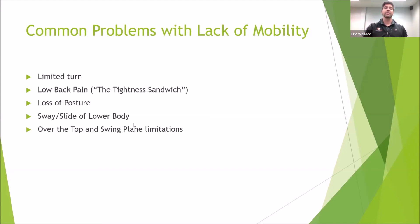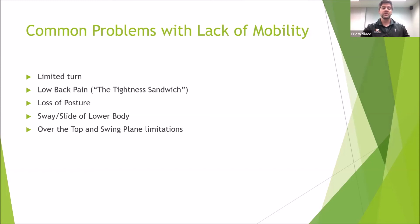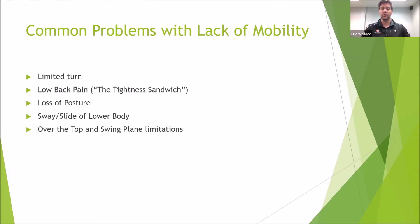Sway and slide in the lower body — hips or lower body moving too far one way away from or towards the target — can really affect contact and consistency with the swing and creates another moving part. Then there's over-the-top and swing plane limitations. For the male amateur and some female amateurs, the body changes over time and mobility lessens. The natural response is that the swing plane starts doing things we wouldn't ideally have it do. A lot of times your swing plane is dictated by what the body can or can't do, and mobility concerns make it very challenging to get the swing you want.